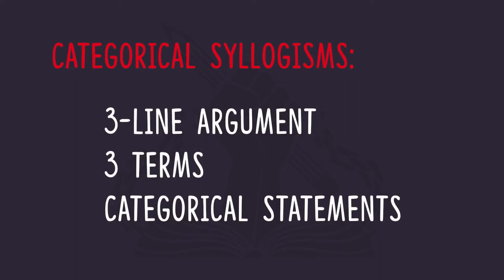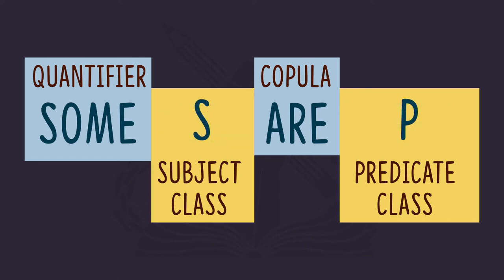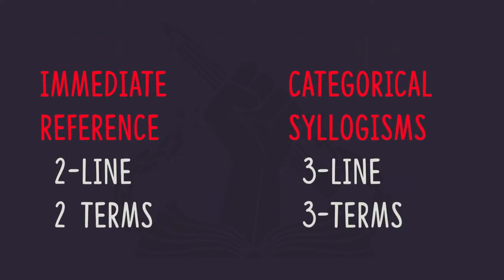A categorical syllogism is a three-line argument composed of categorical statements. So far in this class we've only had to keep track of statements with two categories — the subject class and the predicate class — which we have represented with S and P. With that we've been able to deal with and evaluate those immediate reference arguments, those two-line arguments that only have those two classes.